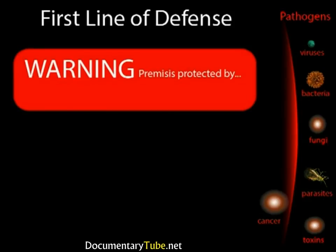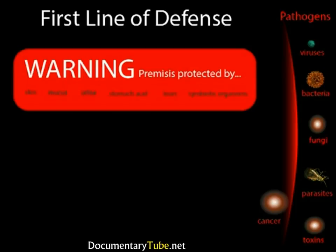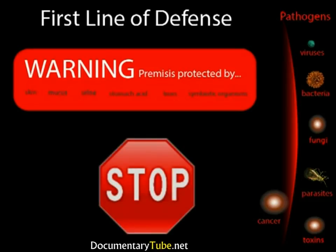The first line of defense is our non-specific immunity system, meaning the defense is not targeted against a specific invader but is an innate defense against a variety of pathogens. We'll take a look at skin, mucus, urine, stomach acid, tears, and symbiotic organisms. These systems act as the first line of defense, either keeping pathogens out—as in the case of skin—or trapping and killing pathogens before they get very far, as with mucus and gastric juice. The vast majority of pathogens are stopped at this first line of defense.